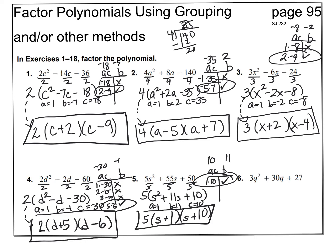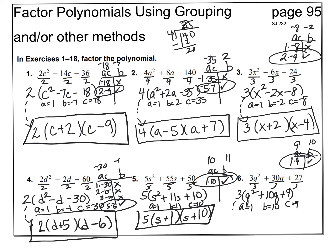Number 6 has a common factor of 3. Take out that 3. A is 1, b is 10, c is 9. A times c is 9, b is 10. 1 times 9 is 10, so that's the right answer. Bring down the GCF of 3, put 2 empty binomials, use middle variable q, plus 1 and plus 9. You can always try these and fast forward to check if you're right.